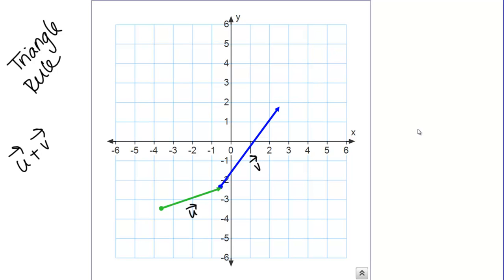Then, the vector U plus V to draw that, I'm simply going to connect the tail here of U to the head of V. If I do that, it's going to look like this. This is the sum of the vectors. The vector I just drew is the vector U plus V.